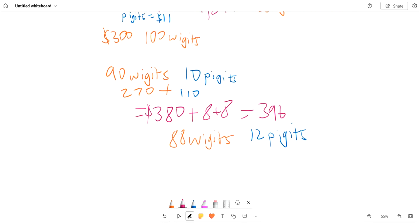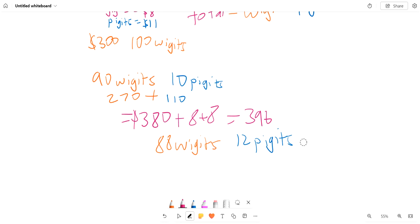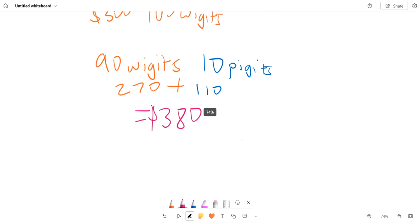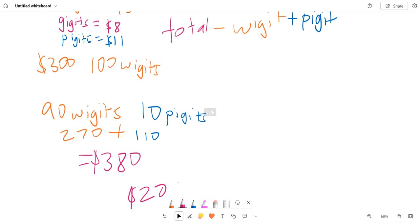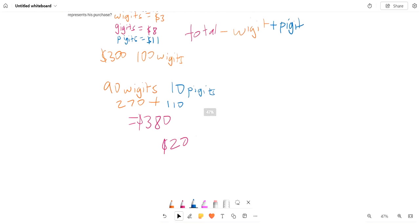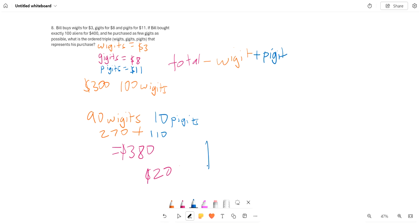Let's go back to where we had 90 widgets and 10 Pidgets. So we now have $380 and we have $20 left, $20 extra that we need to spend. So now we can see that every Gidget that replaces a widget, we will have total minus widget plus Gidget, which equals an increase of $5, because this is 8 and this is 3, so we'll have 8 minus 3, which is 5.